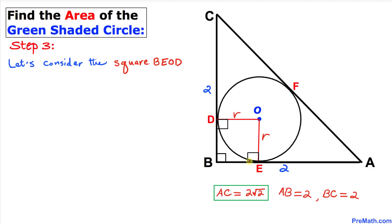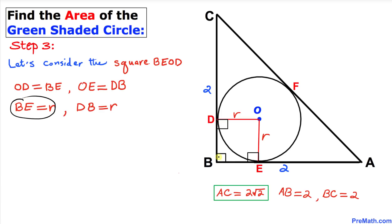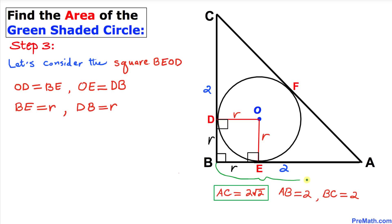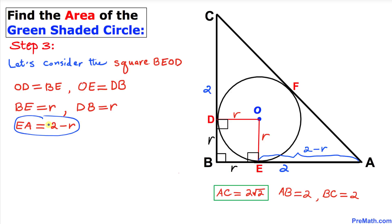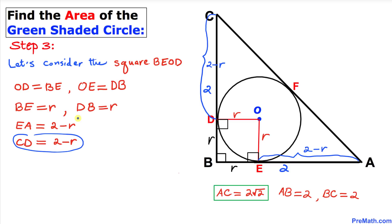Let's consider square BEOD. By the definition of a square, all sides have equal lengths and every interior angle is 90 degrees. Therefore BE equals r and DB equals r as well. Since AB is 2 and BE is r, the distance EA equals 2 minus r. Similarly, since BC is 2 and BD is r, the distance CD equals 2 minus r.